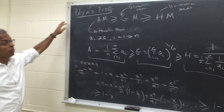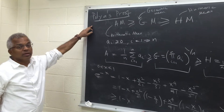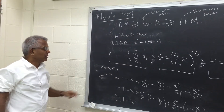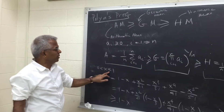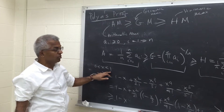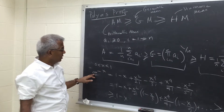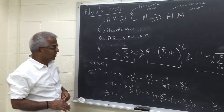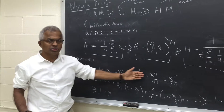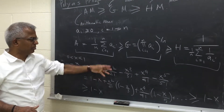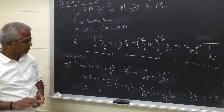I'm going to show you a proof by Pólya — a cute proof. He starts with x between 0 and 1 and expands e raised to minus x using its power series expansion, which has alternating plus and minus terms.